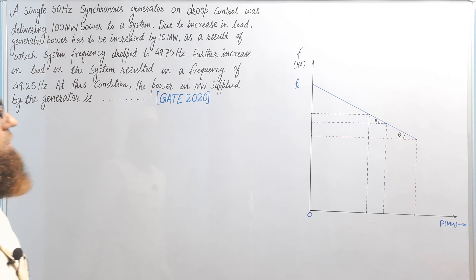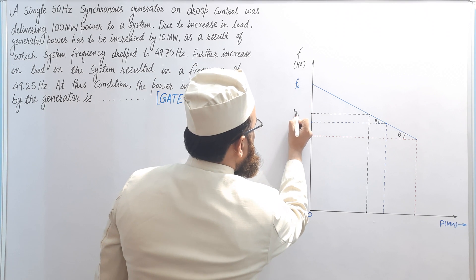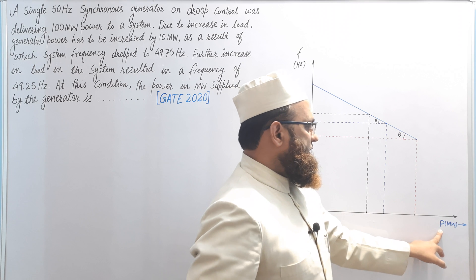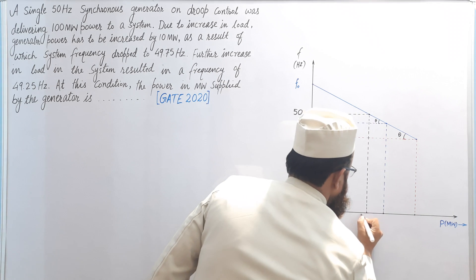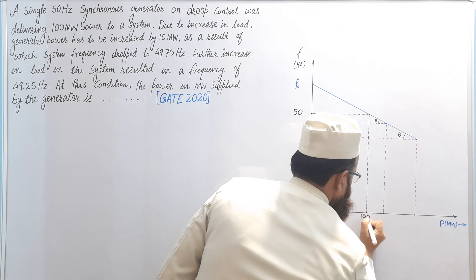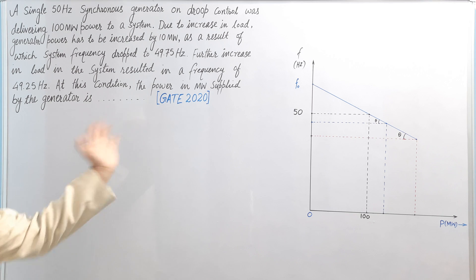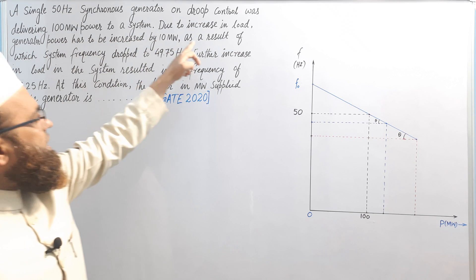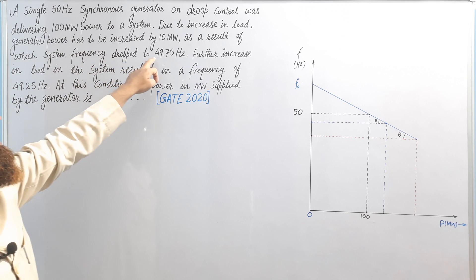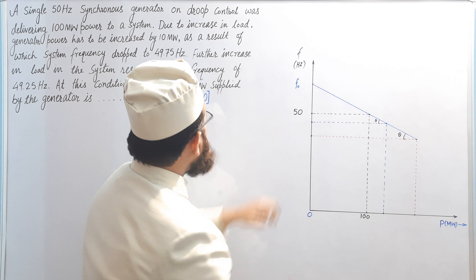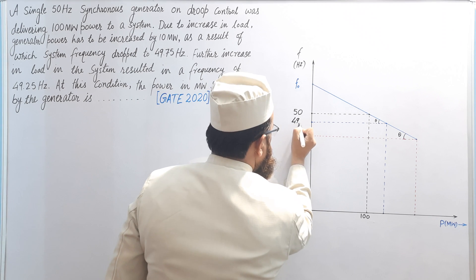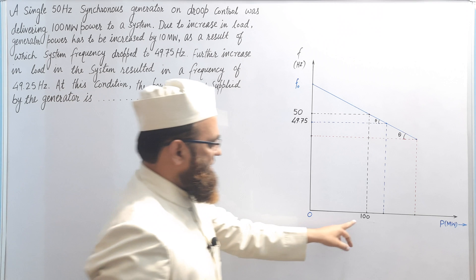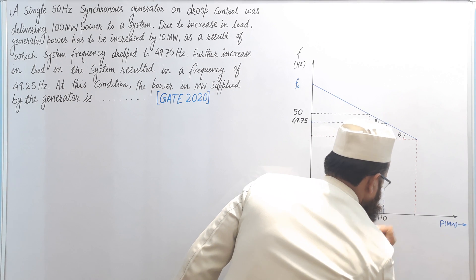First, mark the points: at 50 Hz, the power delivered by the synchronous generator is 100 megawatt. So this is the no-load frequency point — when frequency was 50 Hz, power delivered was 100 megawatt, so corresponding to this the power will be 100 megawatt. Now, after increase of load by 10 megawatt, the decreased frequency is 49.75 Hz from 50 Hz, when power was increased to 110 megawatt.